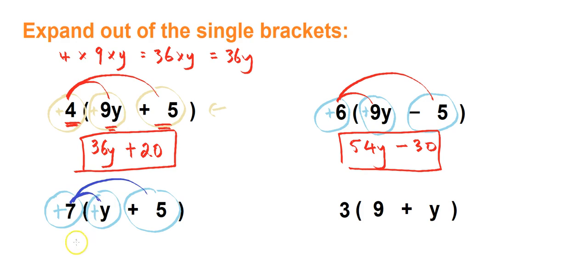7 times y and then 7 times positive 5. So 7 times y, that's 7y. And then 7 times positive 5 is positive 35.